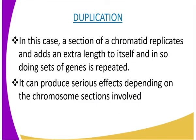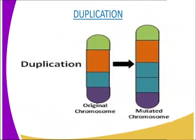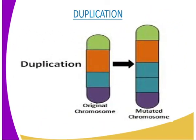The second type of chromosomal mutation is duplication. In this case, a section of a chromatid replicates and adds an extra length to itself, so a set of genes is repeated. Duplication can produce serious effects depending on the chromosome sections involved. For instance, if the gene duplicated is responsible for certain traits, these traits may be overemphasized in the organism. As you can see in our diagram, the original chromosome had one blue-colored section, but after mutation we have two — it has duplicated itself.